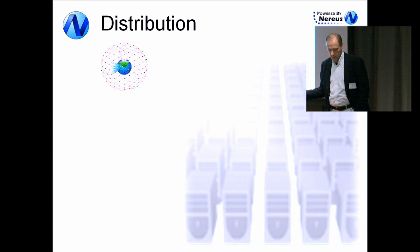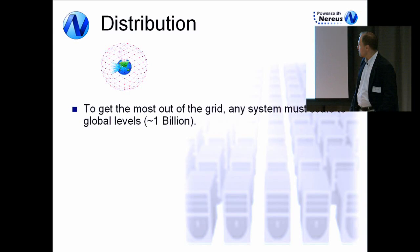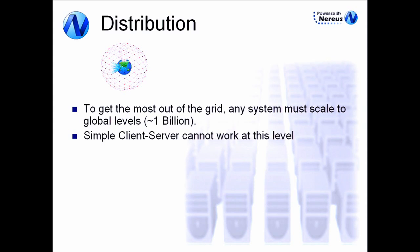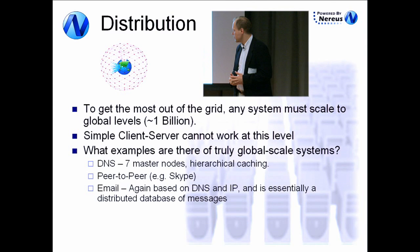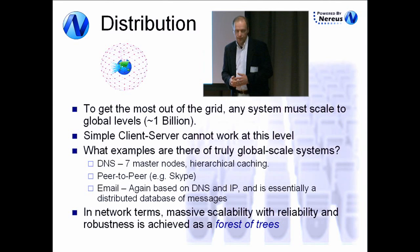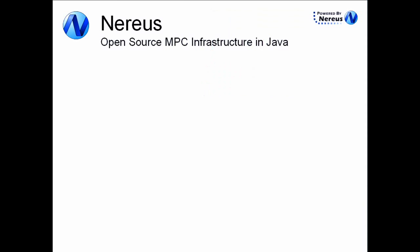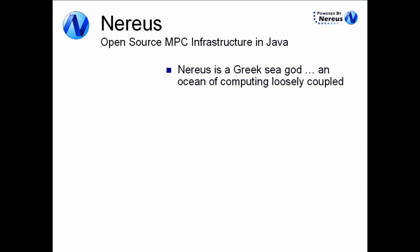Now that we've got a solution for the security issue, let's look at distribution — this is where Noreas comes in. We want to get the most out of the global billion PCs, and we can't use simple client-server; there's no server big enough in the world for that. Looking at other systems that have scaled to that level, we come up with the idea that we need a forest of trees. That's what Noreas is — an open-source, massively parallel computations infrastructure in Java. It's also the Greek god of the sea.